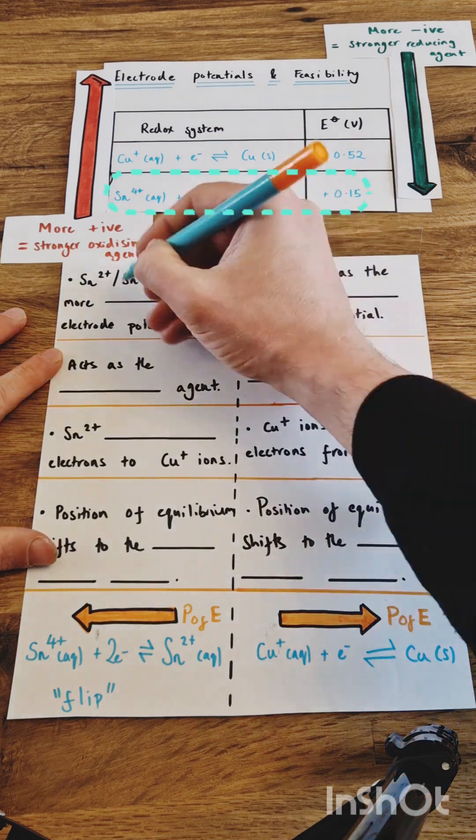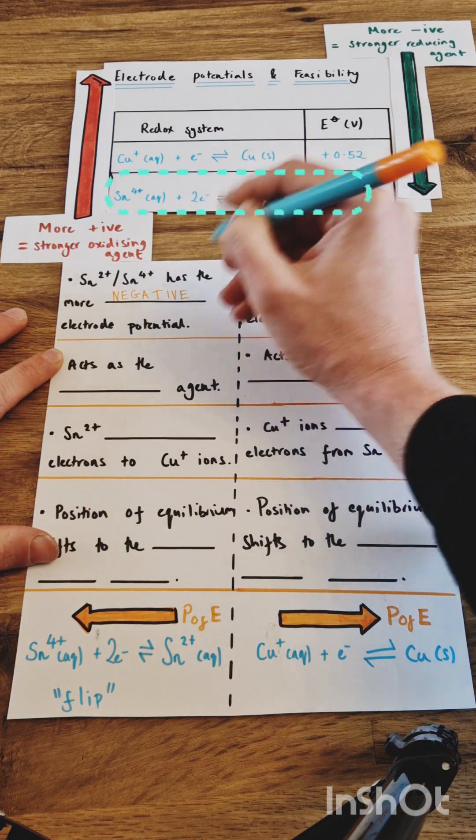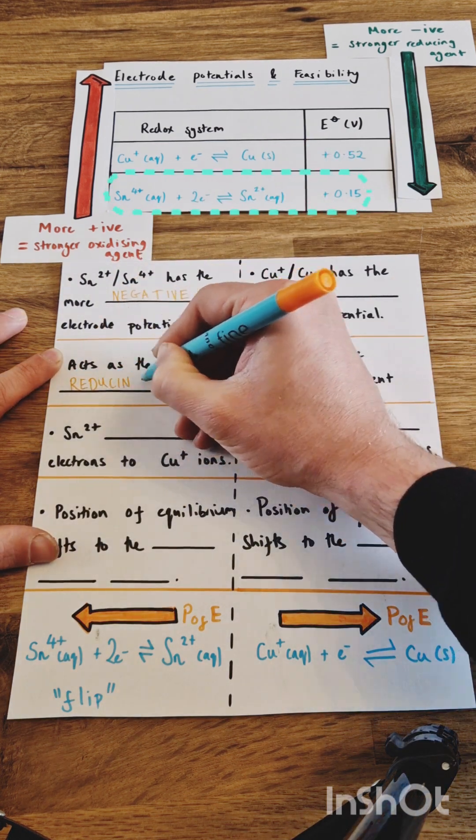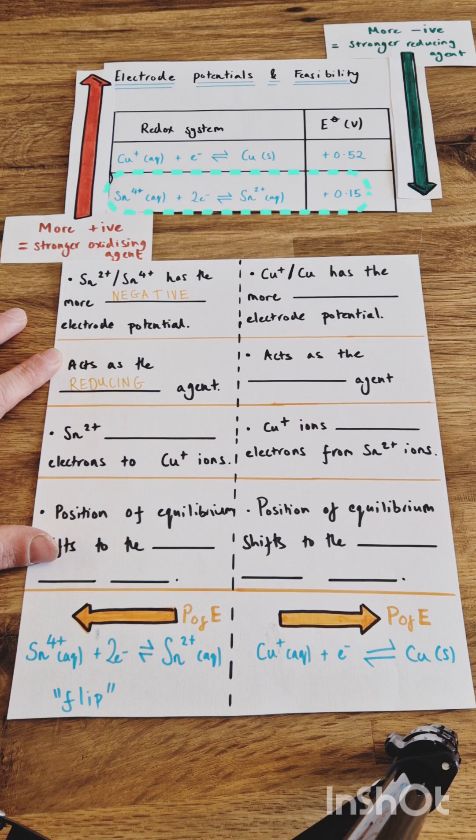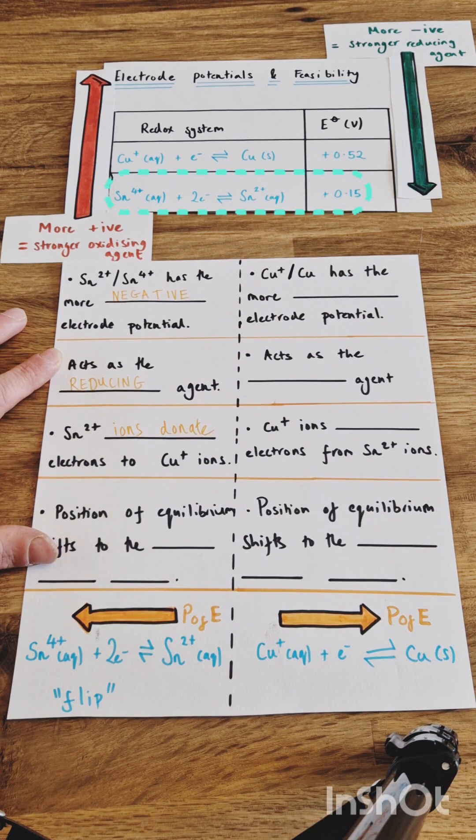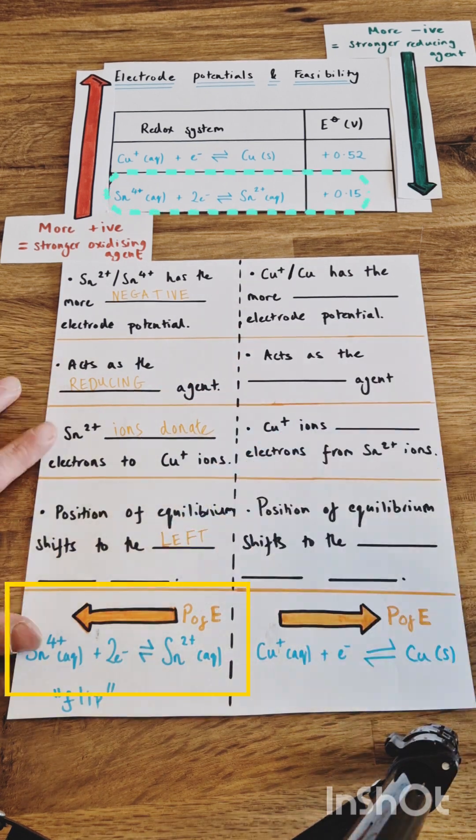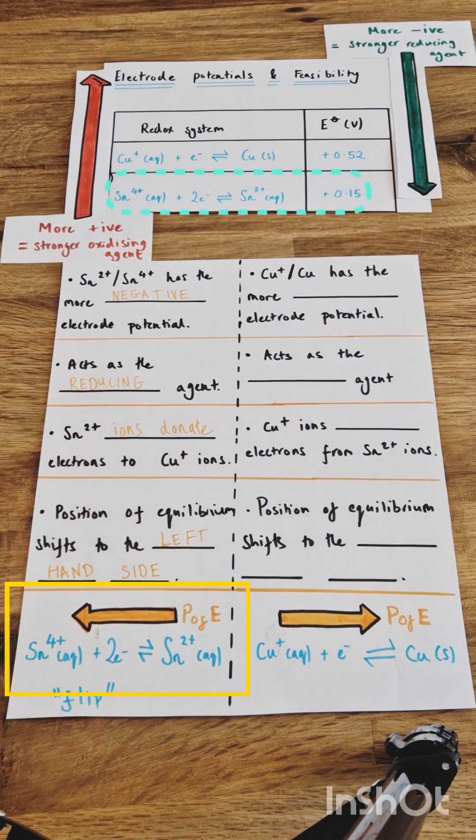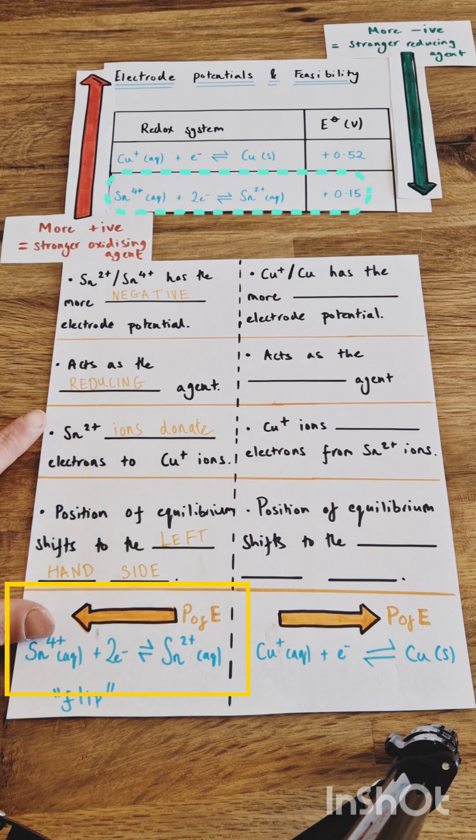So looking at the Sn2+ to Sn4+ reaction, that's the more negative electropotential and should be acting as the reducing agent. So the Sn2+ ion should be donating electrons to the copper plus ions. For the half equation to represent this, we need to shift the position of equilibrium to the left hand side so it's donating electrons.